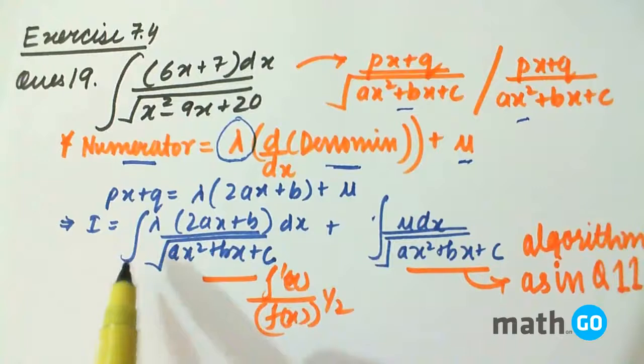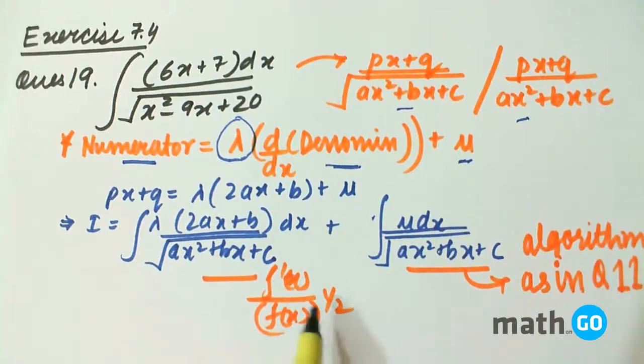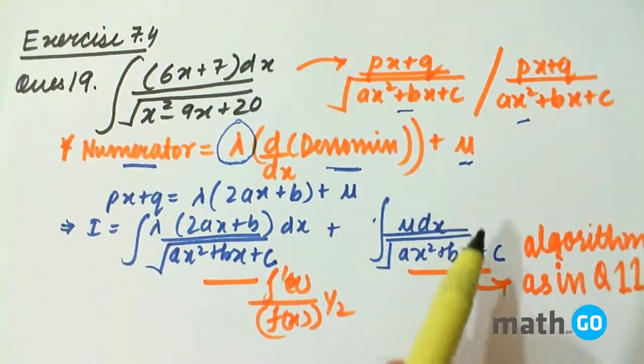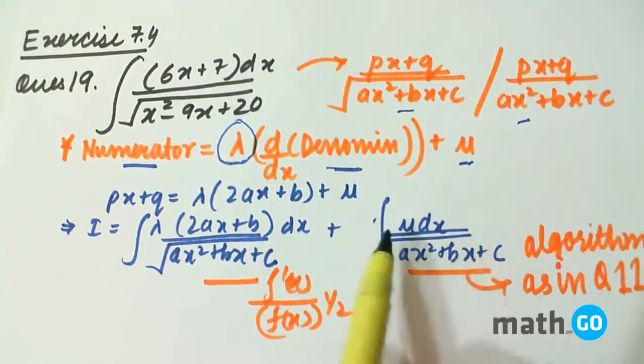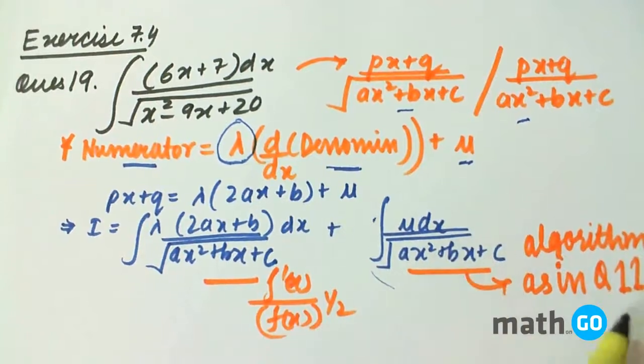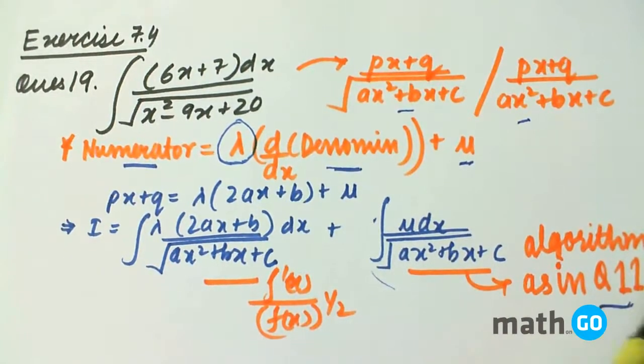This becomes f dash upon f which we can easily solve. And this part, if we look carefully, we have discussed a question like this in question number 11. What algorithm, what steps we have to follow, those same steps we have to follow here.